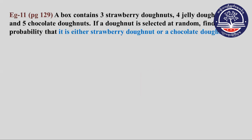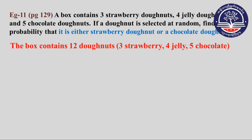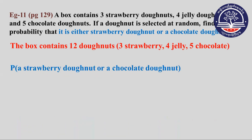If a donut is selected at random, find the probability that it is either a strawberry doughnut or a chocolate doughnut. The box contains 12 doughnuts: 3 strawberry, 4 jelly, 5 chocolate. Find the probability of selecting a strawberry or chocolate doughnut.